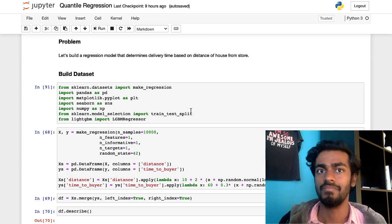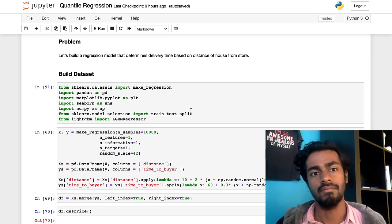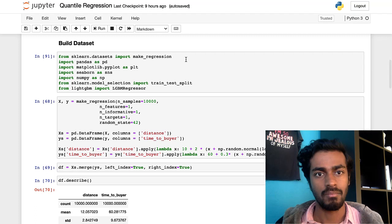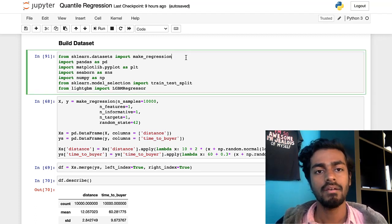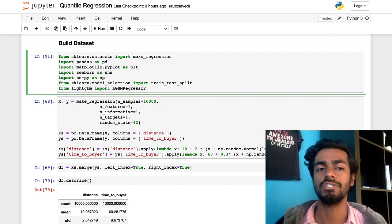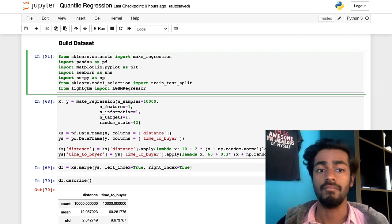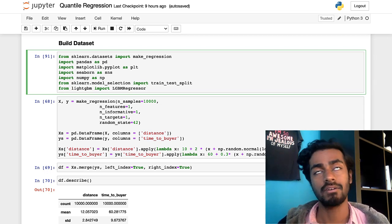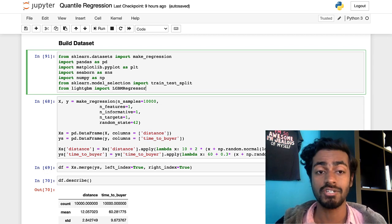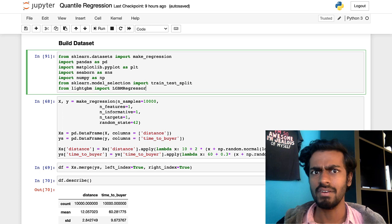So you have certain libraries that were imported here. First is make_regression which will create our regression data set, then we have pandas which is our go-to library for data manipulation, matplotlib for the pretty charts, seaborn for the pretty charts, numpy for the math, test_train_split to split your test and train data. Now LightGBM is basically Microsoft's implementation of gradient boosted decision trees that is actually pretty good and very easy to use for quantile regression and so I use it here.